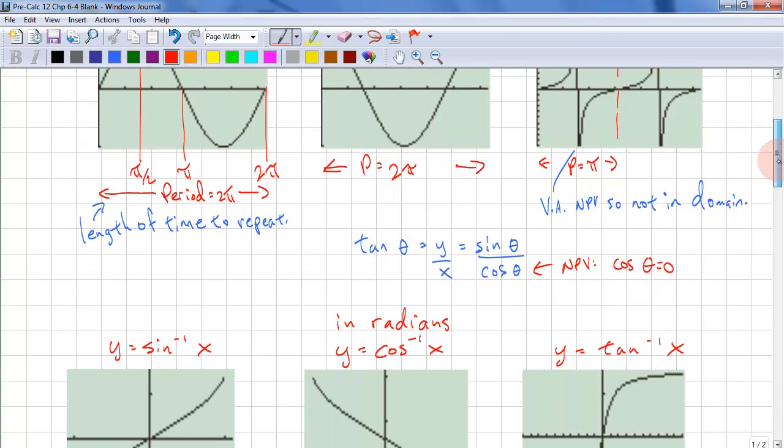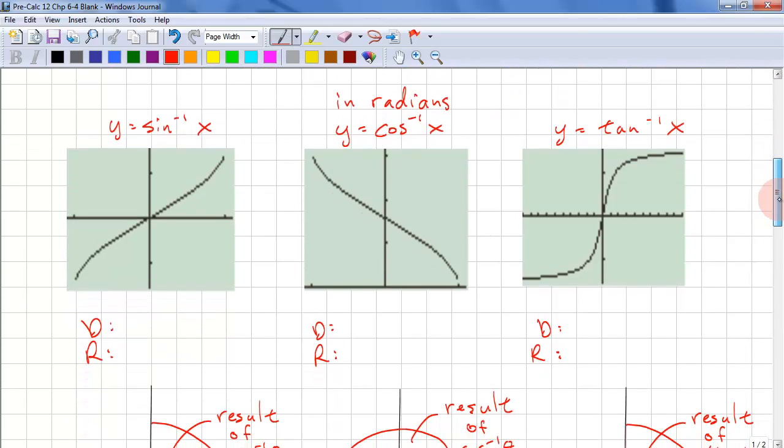Now let's look at the inverse trig functions, and again, these are in radians. We have inverse sine x, also known as arc sine x. And we have inverse cos x and inverse tan x.